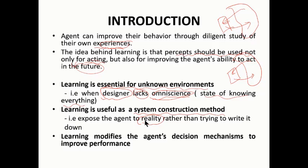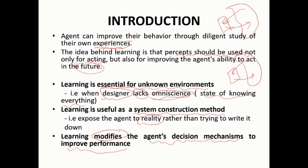Learning also modifies the agent's decisions. Sometimes you learn something earlier, then you study again and modify your knowledge. By doing so in the learning process, you modify the agent's decision mechanism. By gaining better knowledge, the agent can make better decisions and understand exactly what to do. The agent's decision mechanisms get improved over time through learning.